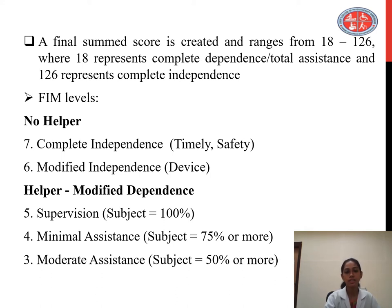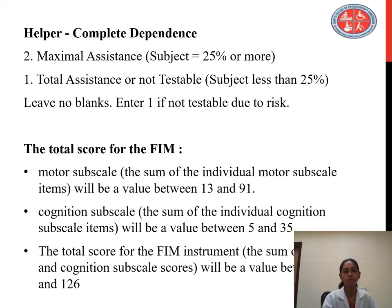There are different levels in the Functional Independence Measure. The first level is no helper, which includes complete independence covering timeliness and safety, and modified independence which includes use of a device. The second level is helper with modified dependence, including supervision at 100%, minimal assistance at 75% or more, or moderate assistance at 50% or more. The third level is helper with complete dependence, including maximal assistance and total assistance or not testable.